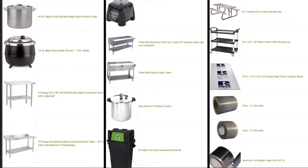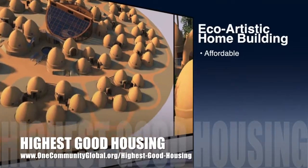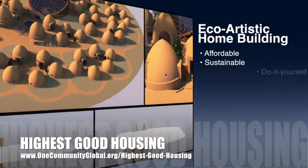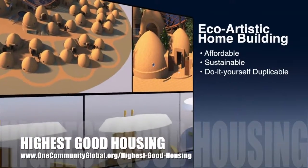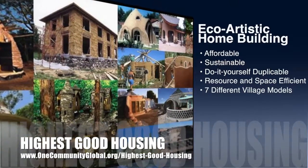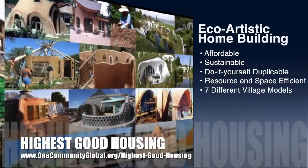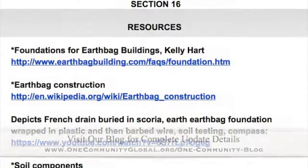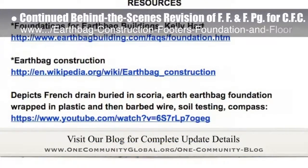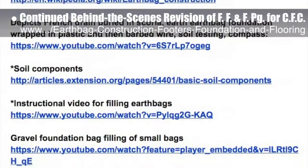The One Community approach to highest good housing is eco-artistic home building that is affordable, sustainable, do-it-yourself, duplicable, resource and space efficient, and consists of seven different sustainably constructed village models. This last week the core team put another 10 hours into the behind-the-scenes revision for the footers, foundations, and flooring page for the crowdfunding campaign we are developing.